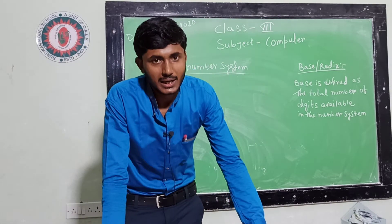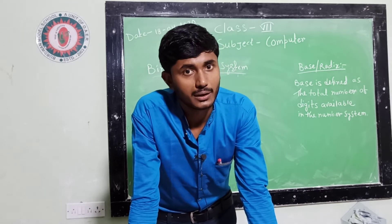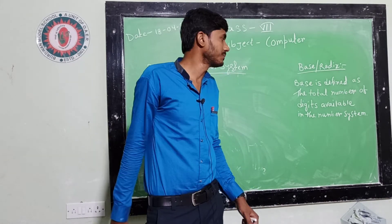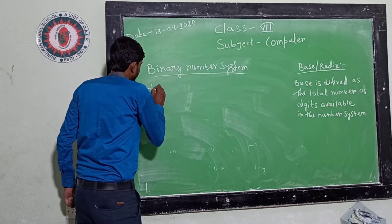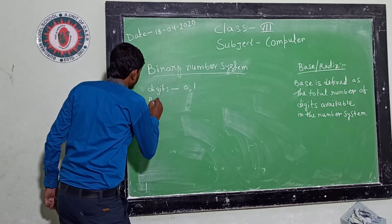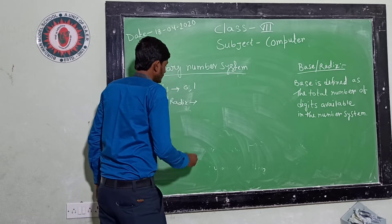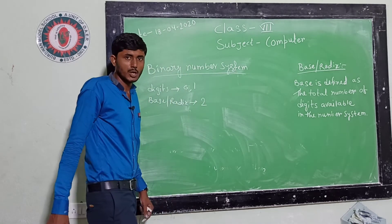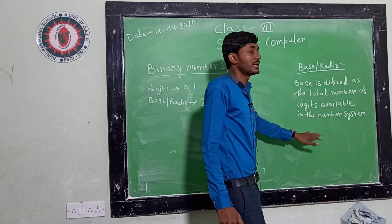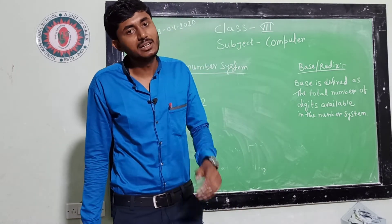Binary number system is a number system which can take only 2 digits, that is 0 and 1. That is why the base or radix of this number system is 2. Base is defined as the total number of digits available in the number system.